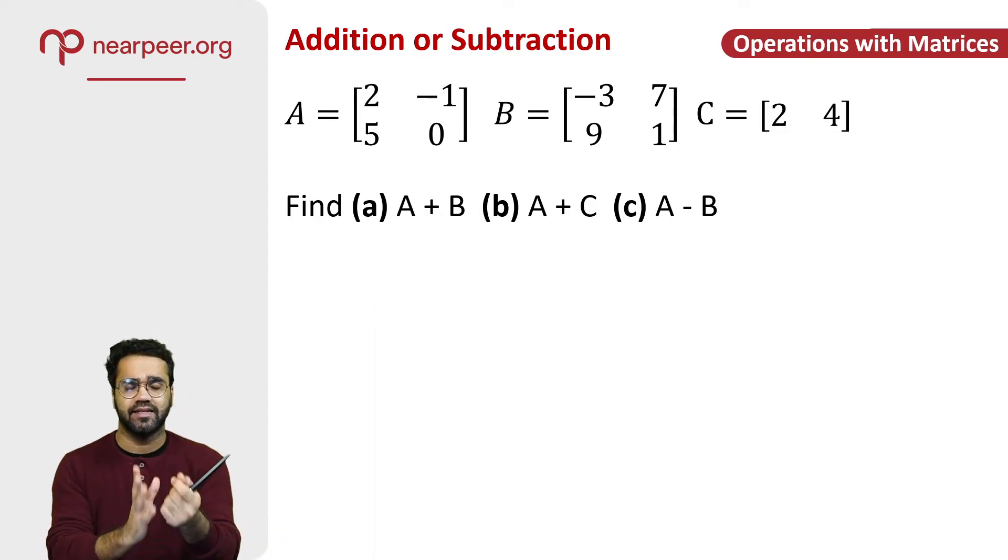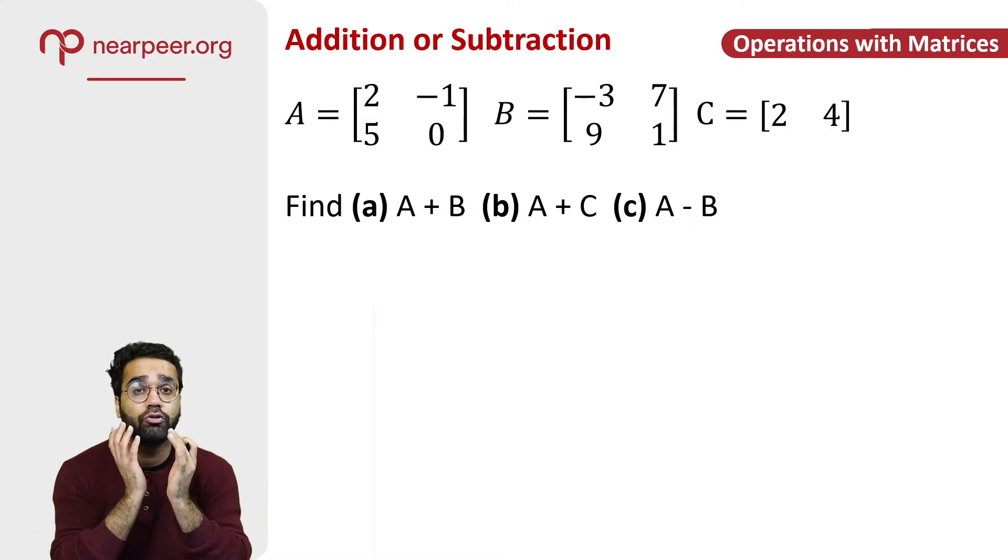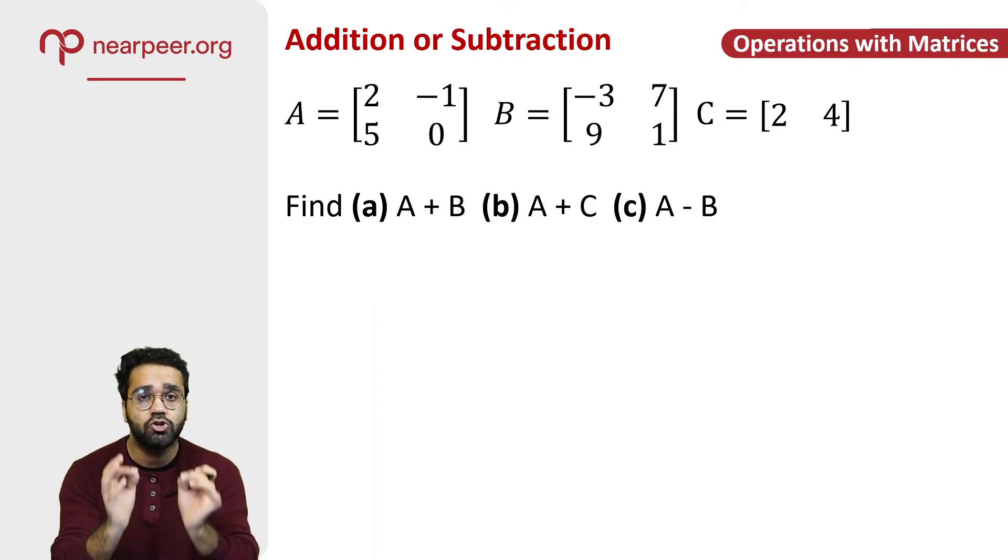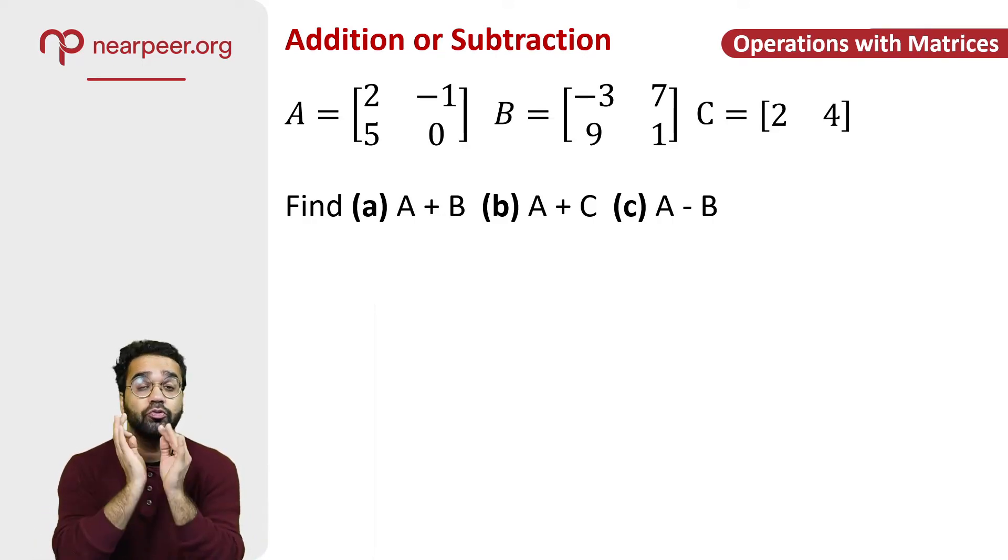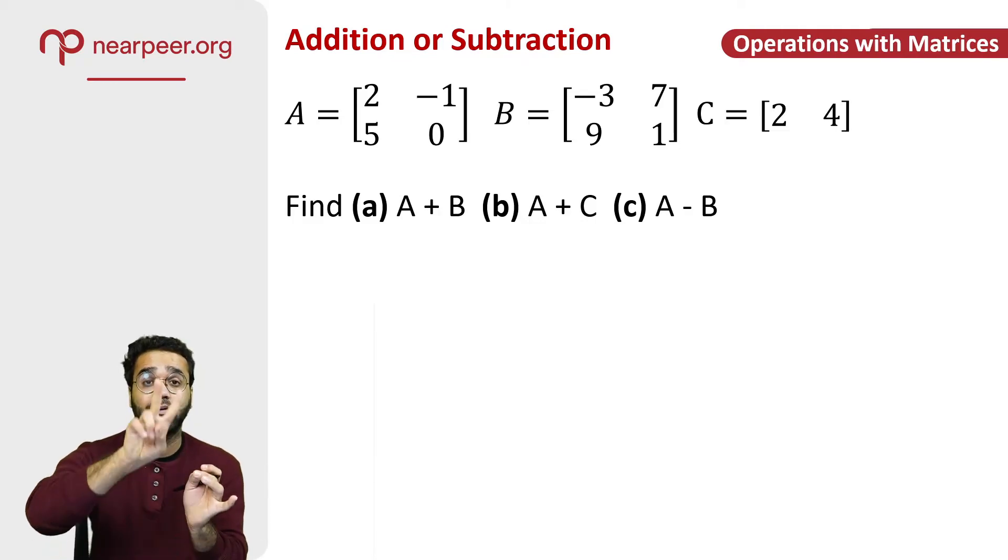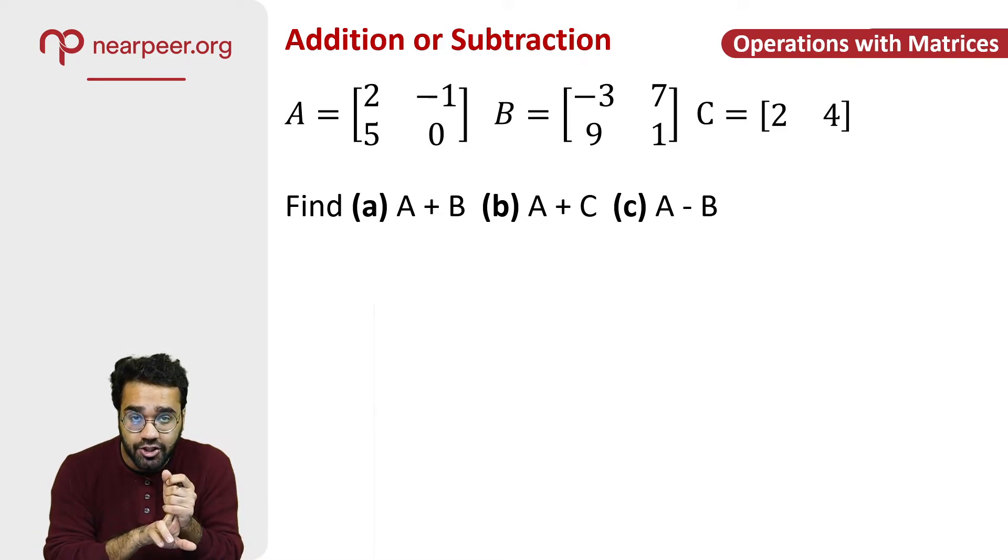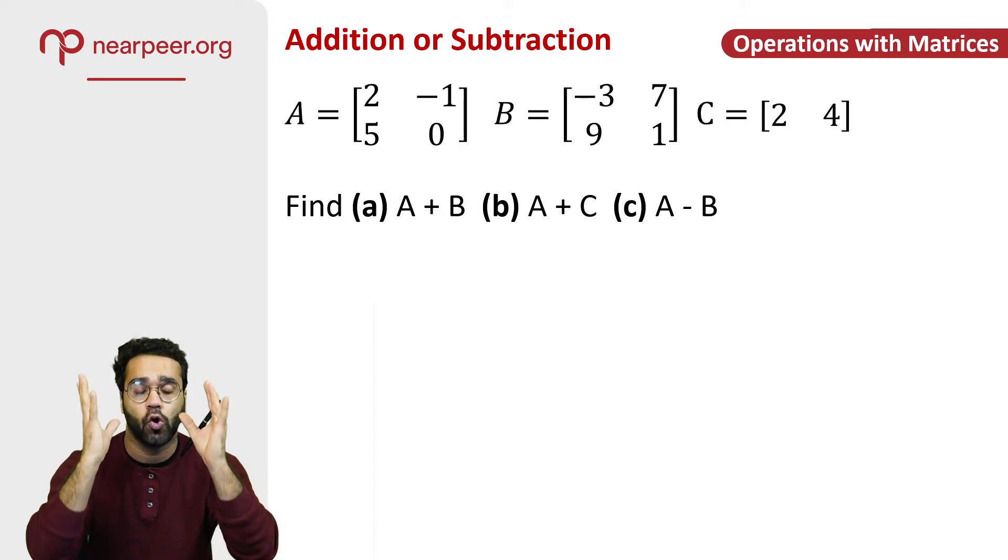Now let's quickly discuss addition and subtraction. So whenever you're adding or subtracting two or more matrices, the matrices need to have the same order. If they do not have the same order you cannot perform addition or subtraction. I'm only talking about the first two operations: addition and subtraction. The matrices which are being added or subtracted need to have the same order.